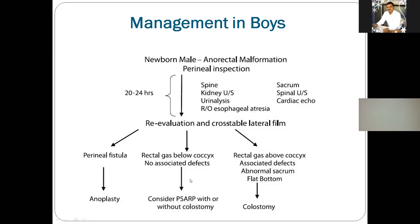We usually advise PSARP in males to restore the anatomy by delivering the rectum and creating a normal anal opening. Sometimes the rectum is very high, a complex defect is present, and the flat bottom — sacrum — is not fully developed; sacral vertebrae may be deficient and the rectum is very high on X-rays. Then definitely a staged procedure is advised. We advise colostomy and stoma to save the life, the stoma functions, and the baby becomes temporarily fine. After 8 to 12 weeks, further investigations are advised and then the definitive PSARP procedure is performed.